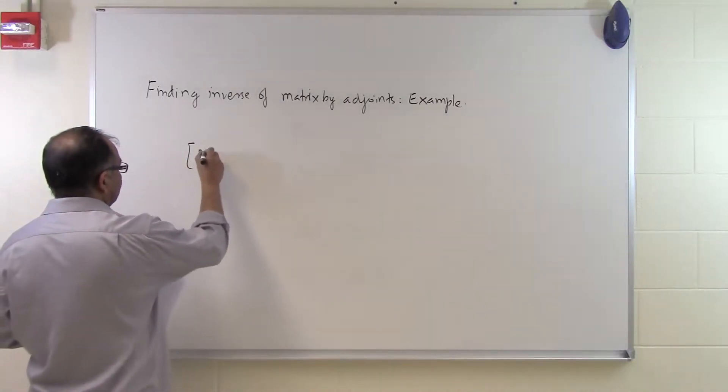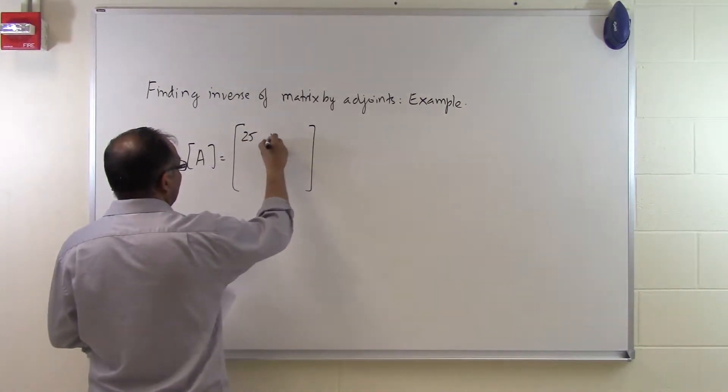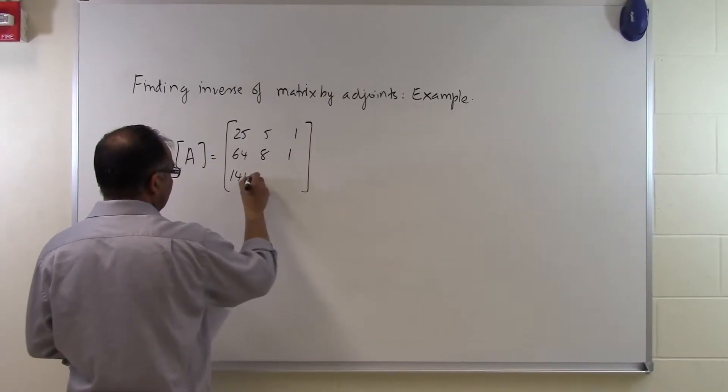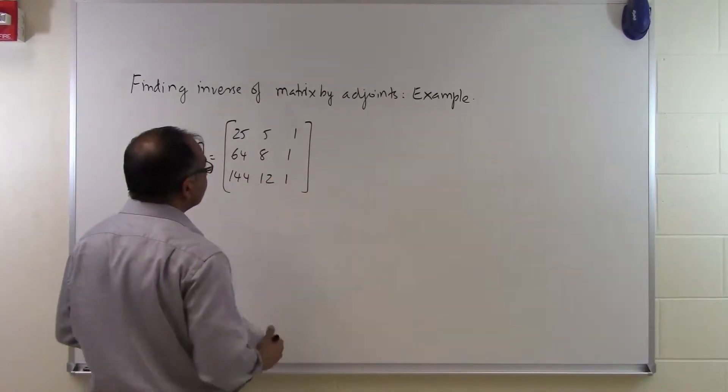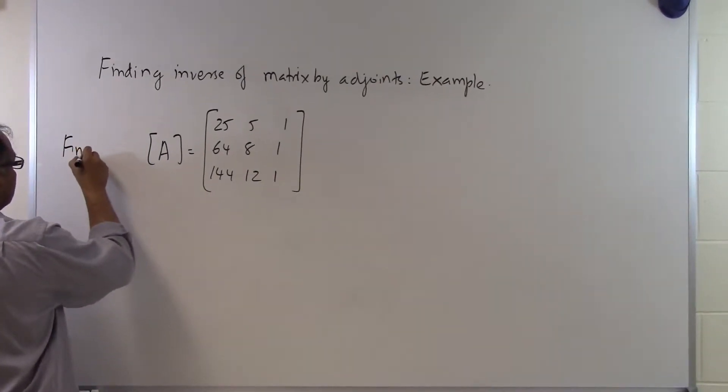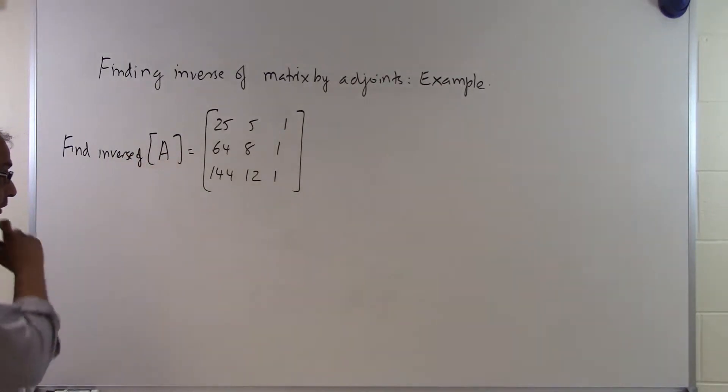If somebody asks you to find the inverse of this matrix here: 25, 5, 1, 64, 8, 1, 144, 12, 1. So find the inverse of this matrix. That's the problem statement.